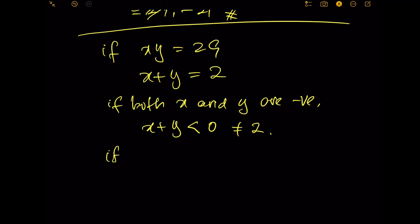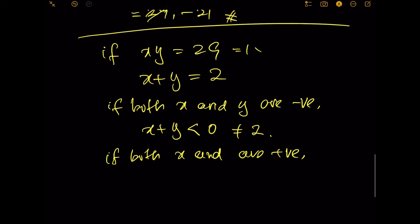On the other hand, if both x and y are positive, such as 1 times 29, or another choice 2 times 14.5, and so on, then x plus y must be something bigger than 2.